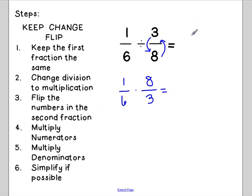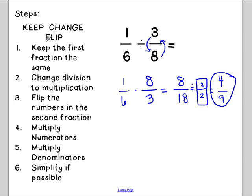Then, multiply our numerators. 1 times 8 is 8. 6 times 3 is 18. Multiply my denominators. And I can divide, for sure, by 2. So, I'm going to start there. 8 divided by 2 equals 4. 18 divided by 2 equals 9. And that is as simplified as it gets. So, that is my final answer.